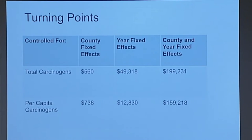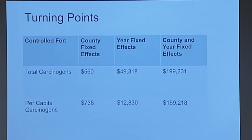However, when I control for both county and year fixed effects — effectively ignoring time and space and looking at people's preferences alone — we see a much higher turning point level of income, indicating that once the initial intercept-shifting forms are controlled for, there may or may not be an actual desire to lower pollution beyond simply moving or technology increasing.